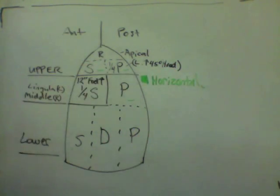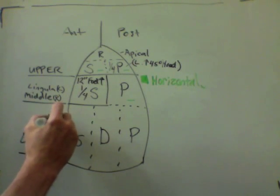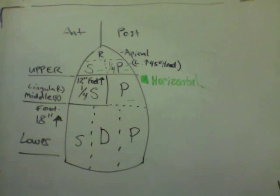Everything in the green there, the bed is just horizontal. So the bed is not elevated at all except for that upper left posterior lobe. And then for all the basal segments except for that superior segment, the foot of the bed is elevated 18 inches.